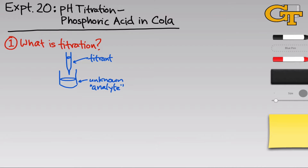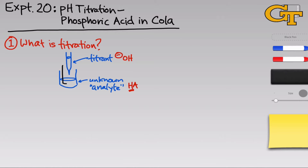In acid-base titrations, the titrant is the opposite of whatever the analyte is — if the analyte is an acid, the titrant is a base, and vice versa. Titration relies on an irreversible, complete reaction between the titrant and the analyte. In the titration you'll perform, the analyte will be a cola solution containing an acid, HA. We'll simplify it to a monoprotic acid here, although you'll be looking at a polyprotic acid in the lab. The titrant will be a base — typically sodium hydroxide for this experiment.